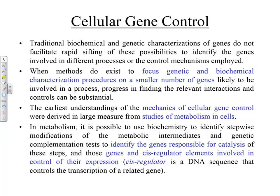In the case of metabolism, those pathways have been figured out completely because they've been studied in lower-level organisms like bacteria or yeast. You have steps along the metabolic pathway and experiments where you take away a particular enzyme and see what happens. The earliest understandings of the mechanics of cellular gene control were derived in large measure from studies of metabolism. In metabolism, it is possible to use biochemistry to identify the stepwise modifications of metabolic intermediates and genetic complementation tests — to identify genes responsible for catalysis of these steps and the cis-regulatory elements involved in control of their expression.